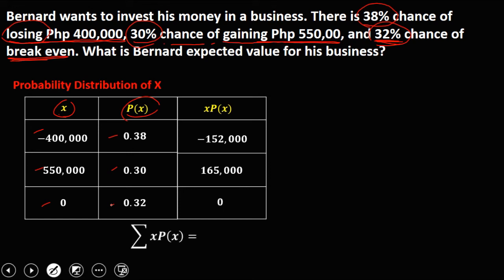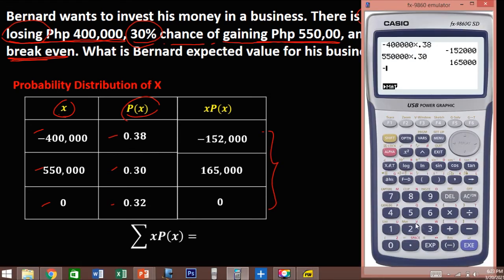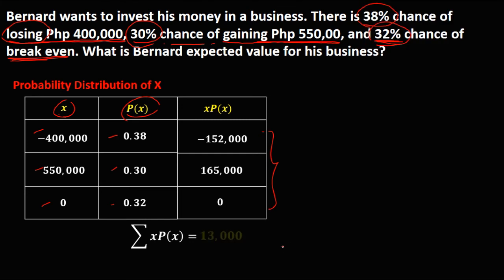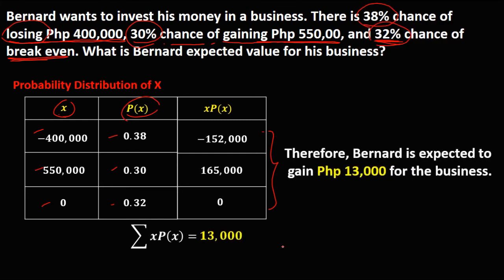To compute the expected value, we add all these values: negative 152,000 plus 165,000. The expected value is 13,000. Therefore, Bernard is expected to gain 13,000 pesos from the business.